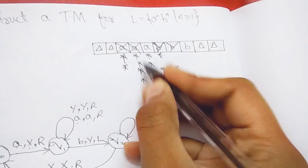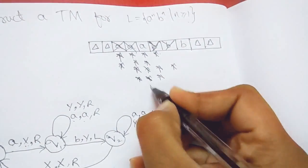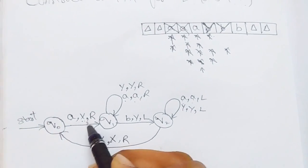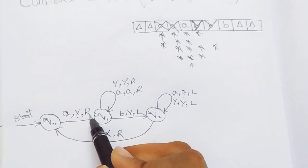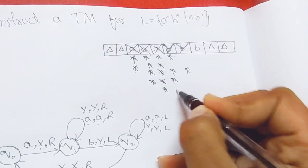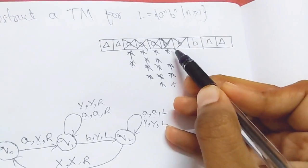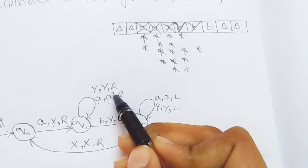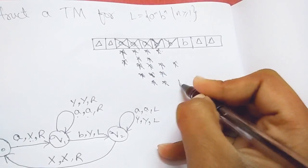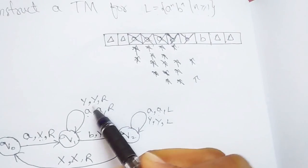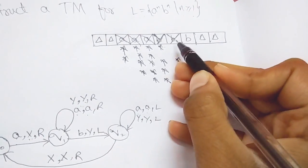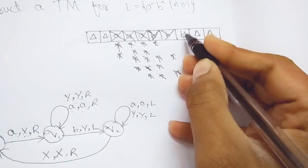X is replaced with X itself and the header moves right. Now it sees A again: A is replaced with X and the header moves right. Then there is Y — replaced with Y itself, moving right. Again Y is replaced with Y and the header moves right. It's now seeing the last B.